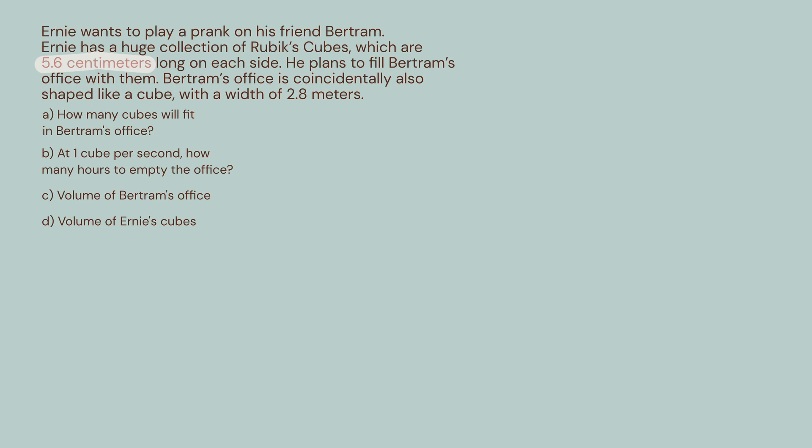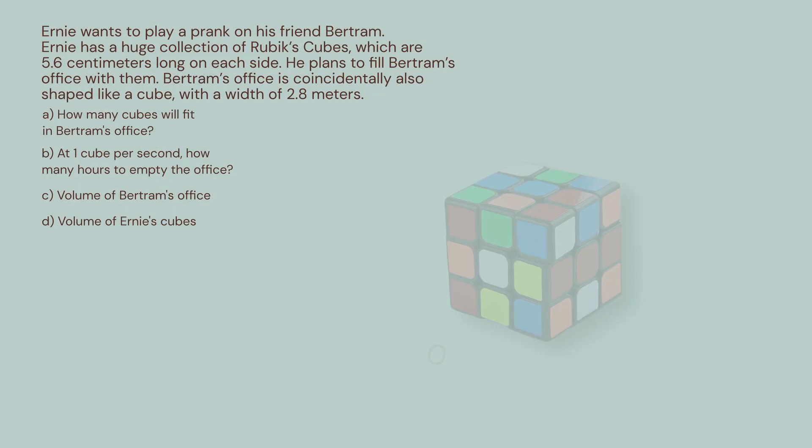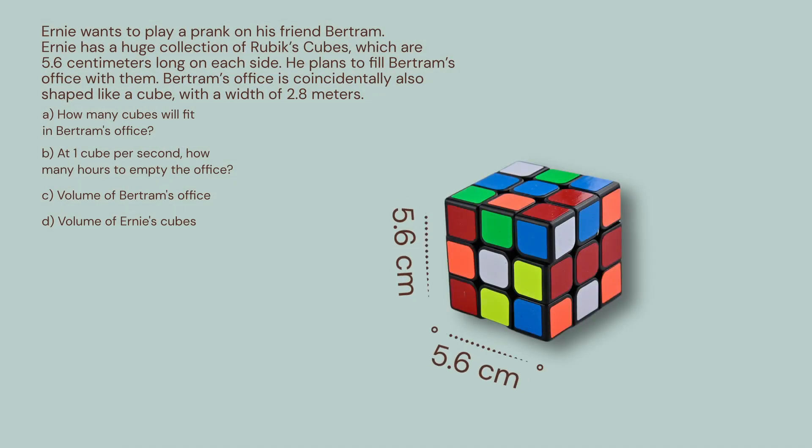We need to know the formula for the volume of a cube. To get the volume of any box, you multiply the length times the width times the height. A cube has sides that are all the same length, so you just have to measure one side and then cube it.